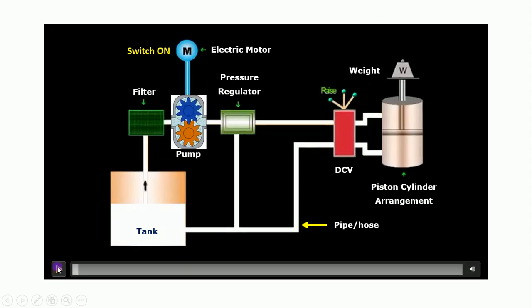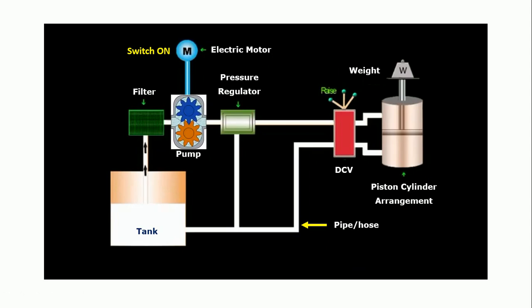Hence, fluid present in the reservoir will start flowing towards the pump through a filter. The function of filter is to arrest the dust particles which are going to enter the pump. As the fluid passes through the pump, the pressure energy of the fluid is going to increase. At pressure regulator or pressure control valve, we can set the required pressure for piston cylinder arrangement, and the excess pressure will be bypassed towards the tank.